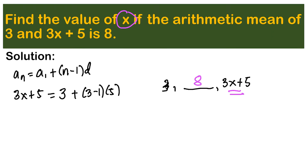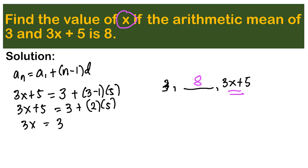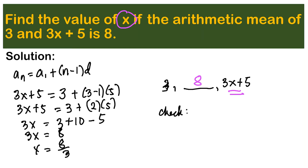So: 3x plus 5 equals 3 plus 2 times 5, which gives 3x plus 5 equals 3 plus 10, so 3x plus 5 equals 13. Subtracting 5 from both sides: 3x equals 8. Dividing both sides by 3, we get x equals 8 over 3.